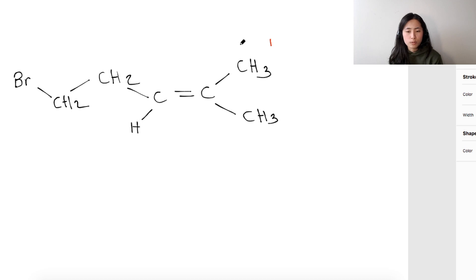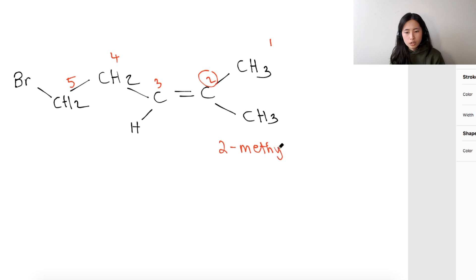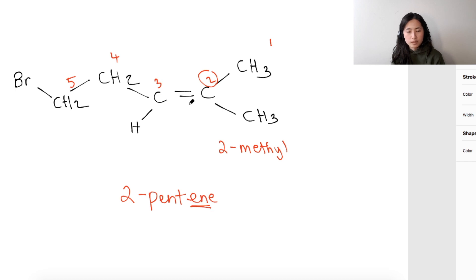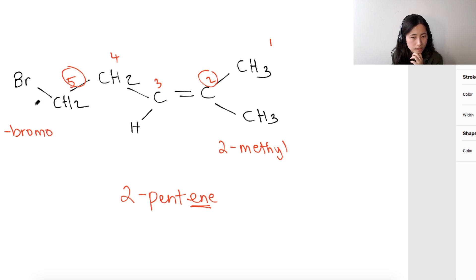Because these are two equal methyl groups on either side, you can start from either end. Starting from here, this is carbon 2 where you have the double bond, then 3, 4, 5. At carbon 2 you have a methyl group — so that's 2-methyl. The parent chain is 5 carbons, so it's pentene. The double bond is at carbon 2, making it 2-pentene. At carbon 5 you have bromo, so that's 5-bromo.